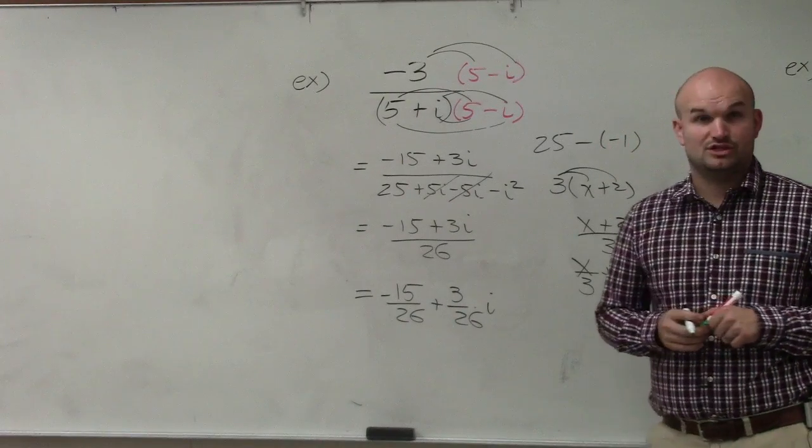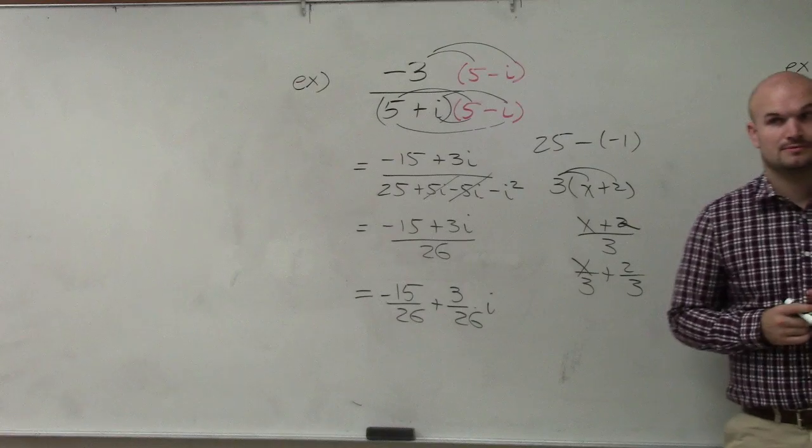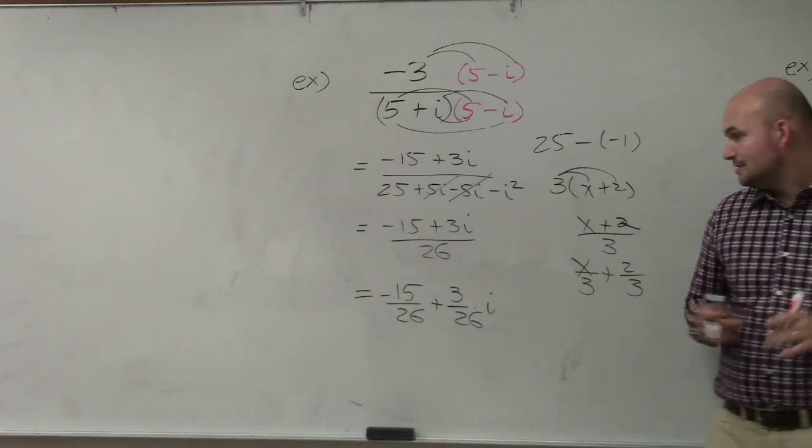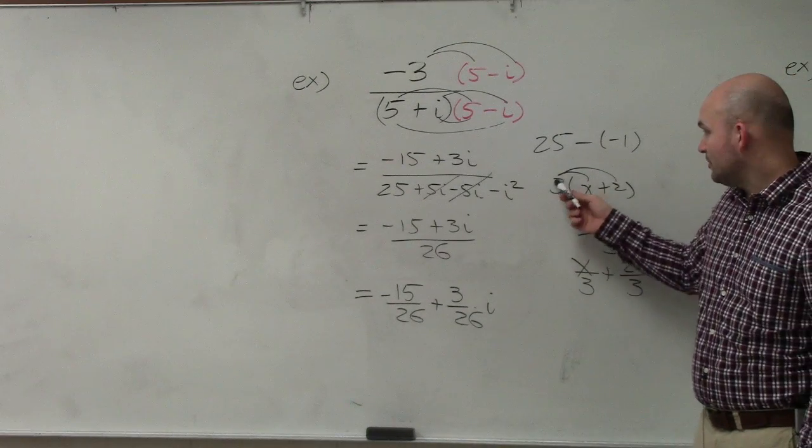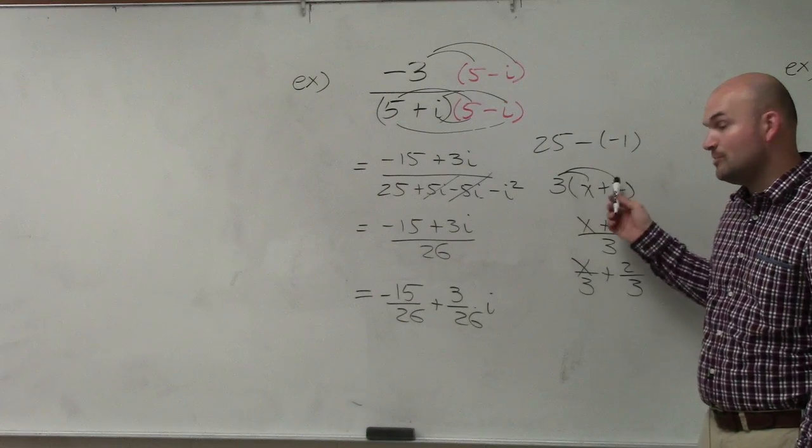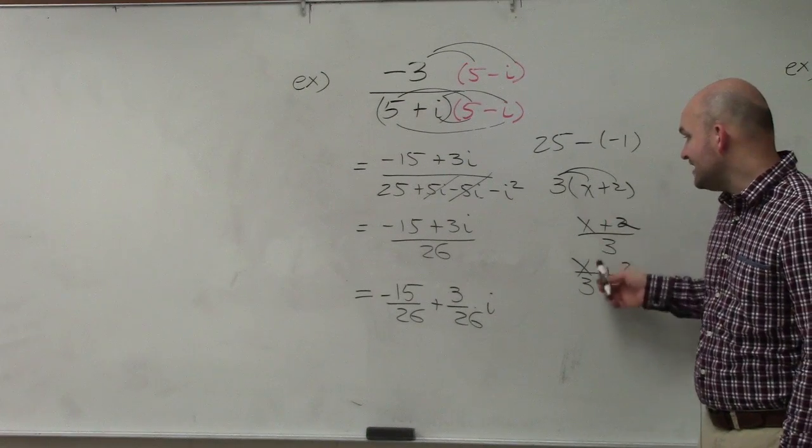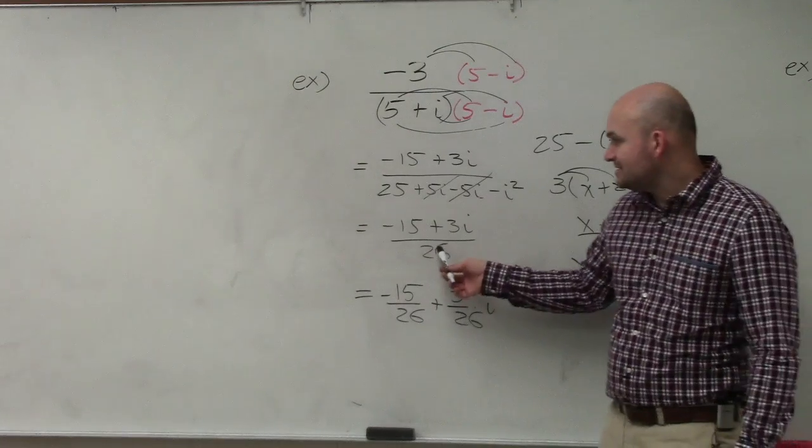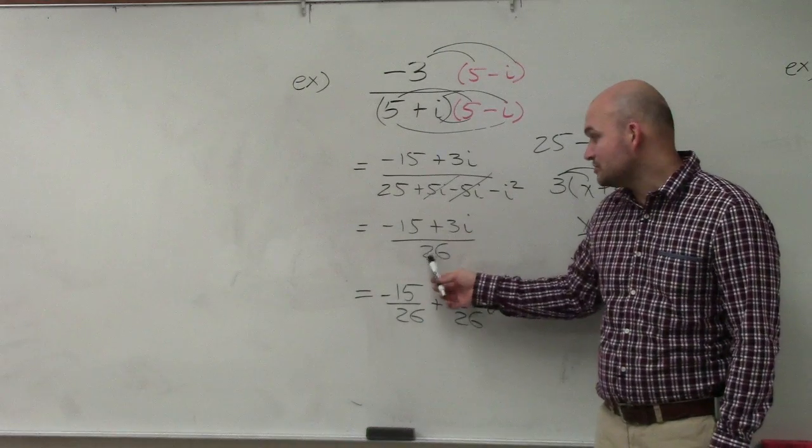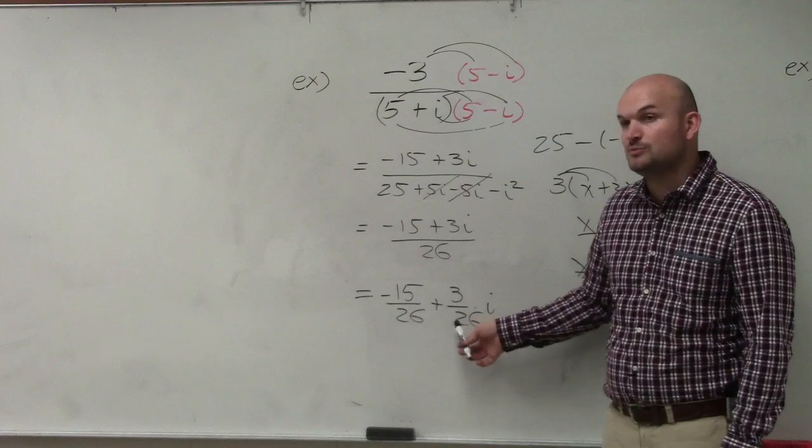Just remember guys, distributive property. If you're multiplying a number times an expression, you multiply to both of them. If you're dividing an expression by a number, you divide that number into both of them. So 26 is being divided into this expression, so 26 needs to be divided into both those numbers.